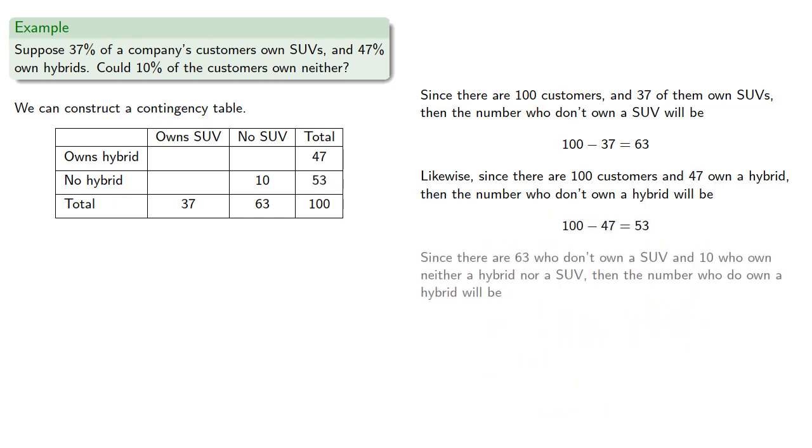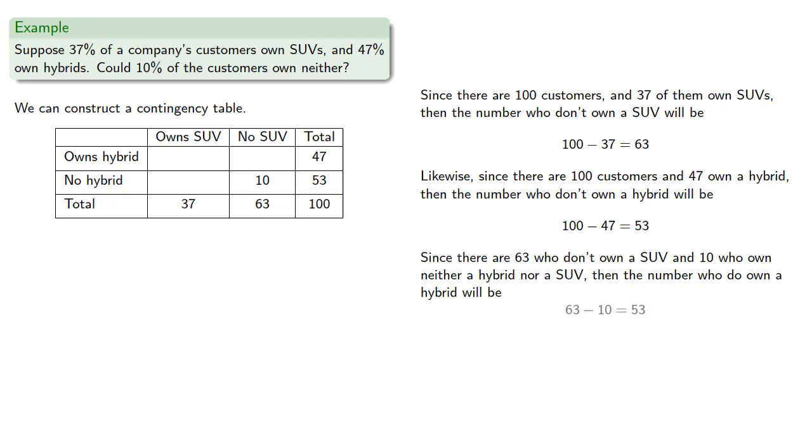Since there are 63 who don't own a SUV, and 10 who own neither a hybrid nor SUV, then the number who do own a hybrid will be 53. And we have a problem because the number who own a hybrid but no SUV is greater than the number who own a hybrid. And so we can conclude that it's not possible to have 10% of the customers to own neither hybrids nor SUVs.